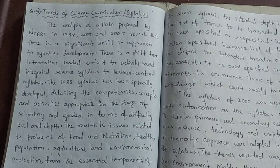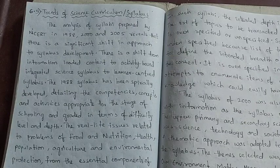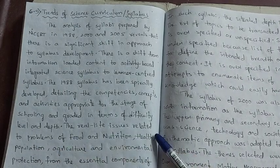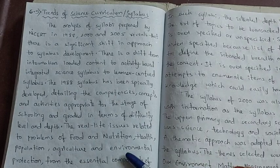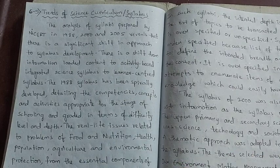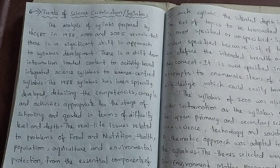The 1988 syllabus was designed to develop spirally - competencies and activities for students increase gradually stage by stage, with difficulty level increasing according to the class level. The real-life issues related to problems of food and nutrition, health, population, agriculture, and environmental protection form the essential components of science learning in that syllabus.